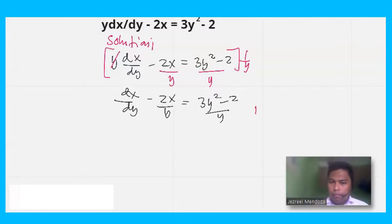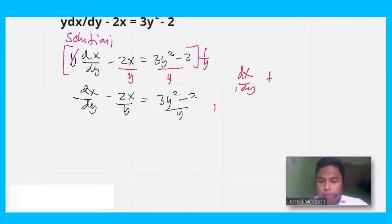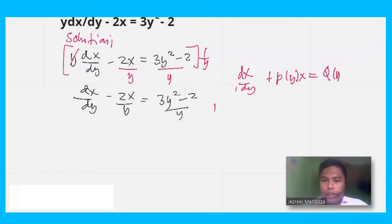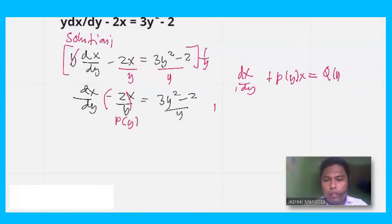We have a clue. For linear in x, the general form is: dx over dy plus p(y) times x equals q(y). Comparing, this is now our linear equation. This is our p(y) — that's negative 2 over y — and this full expression will be our q(y).